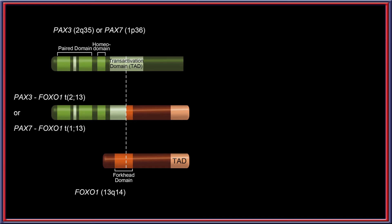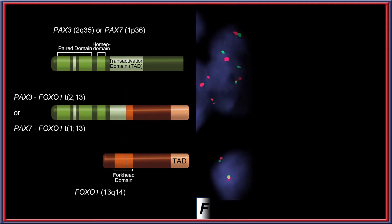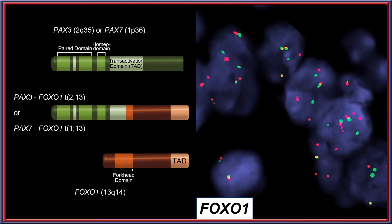The PAX3 or PAX7 translocation with FOXO1 can be easily detected with FISH, demonstrated here with a FISH break-apart probe for FOXO1 in this example of an alveolar rhabdomyosarcoma.